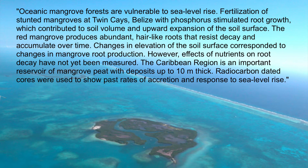One problem with this paragraph is that it's not clear what the main point is. Is it about production and decay of mangrove roots? About what nutrients limit root growth? Or about how thick peat deposits are in the Caribbean? We don't know. It's basically a string of declarative sentences about various topics, but there is no logical flow to how the sentences are arranged. The author has skipped over some important transitional information and included some extraneous information, such as the fact that root decay rates were not measured.